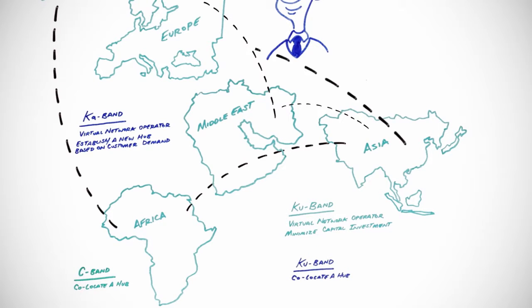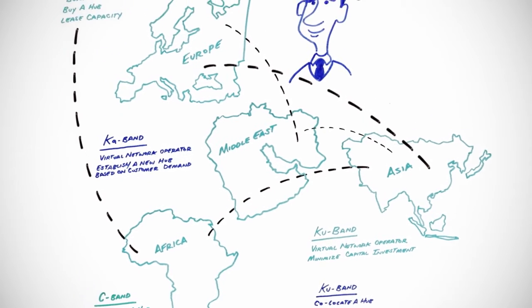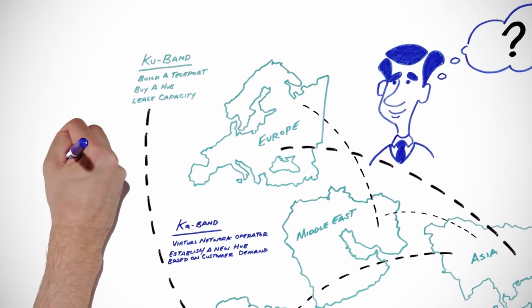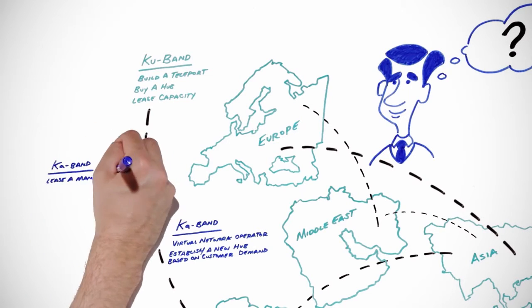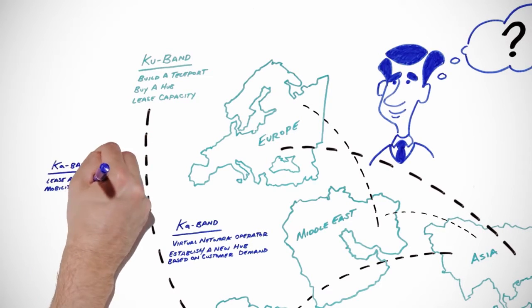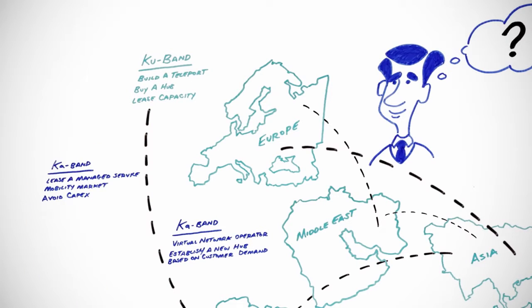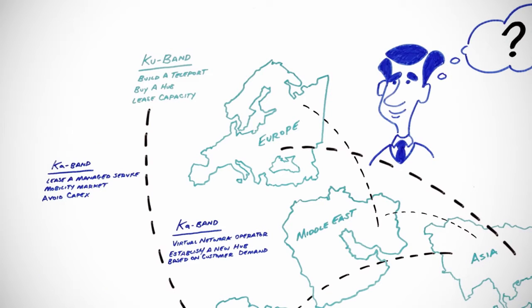As you size up your business opportunity, you make one more move. Back in Europe, you partner with a KA band operator and lease a managed service as a strategy to expand into the mobility market. You avoid capex altogether and can enter the market easily and quickly.